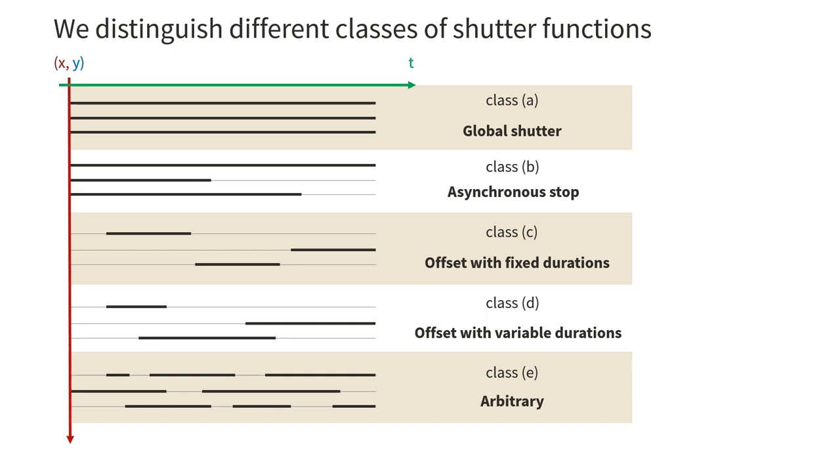Considering different shutter functions is interesting when thinking about different applications. For HDR imaging, a camera should be able to integrate for different amounts of time. Thus, functions of class B, D, or E could be used.